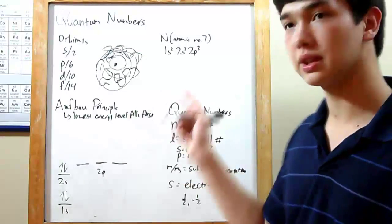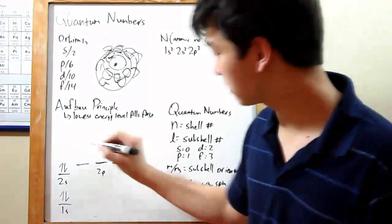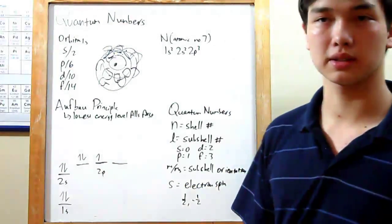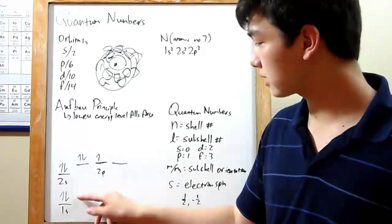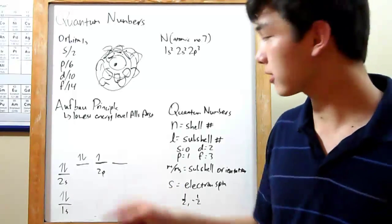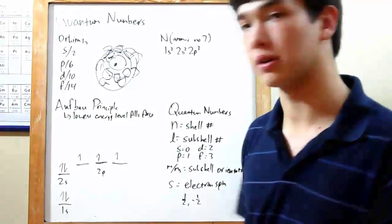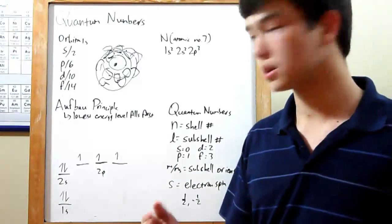Okay, 2s2, and now 2p3. You might be expecting me to fill it in like this, but that's not actually how it works. See, while electrons can travel in pairs like over here, they prefer not to. So as long as you don't have to bump anything up to a higher energy level, keep them alone by themselves.